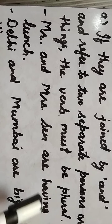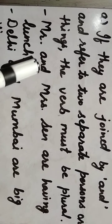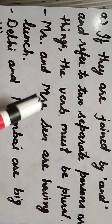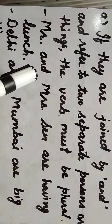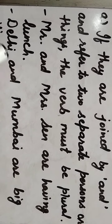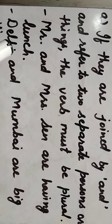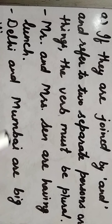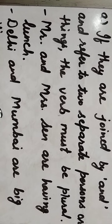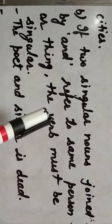'Mr. and Mrs. Sen are having lunch.' Mr. और Mrs. Sen दो अलग-अलग singular nouns हैं और 'and' से joined हैं, तो ये separate हो गए — इसलिए plural verb use होगी। Similarly, 'Delhi and Mumbai are big cities' — दो अलग-अलग nouns की बात है, इसलिए plural verb 'are' use होगी।